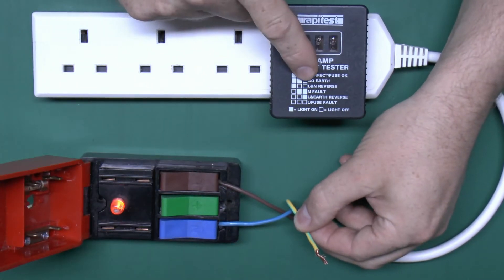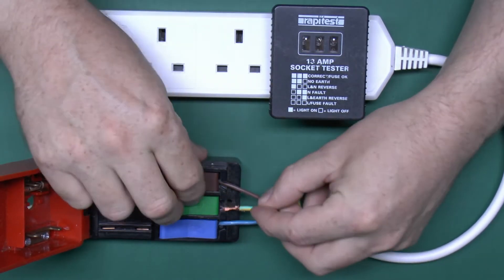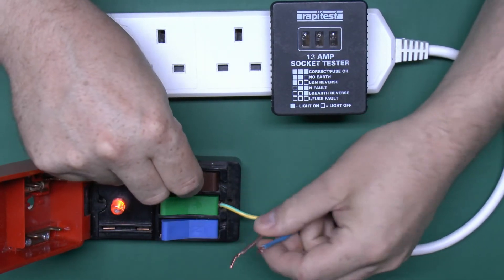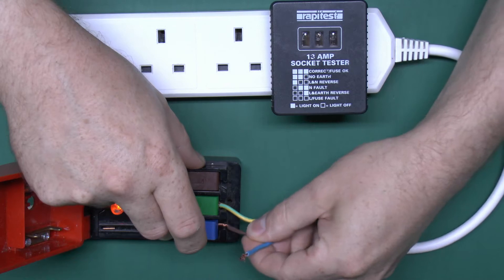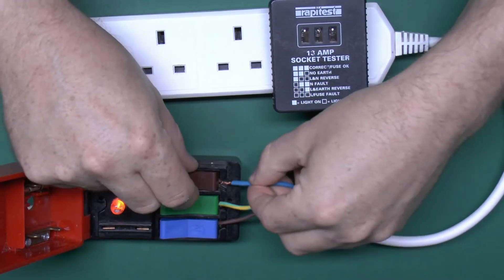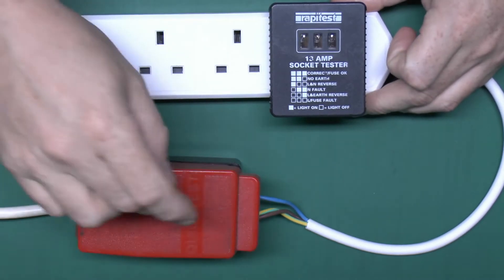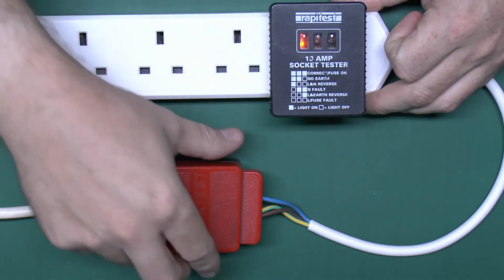Next we have is line and neutral reversed, so replace the earth there, and then of course reverse the line and neutral like that. And we should just get the one light on the end there, and sure enough that works also.